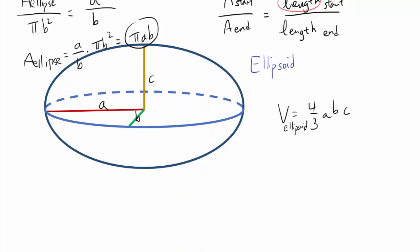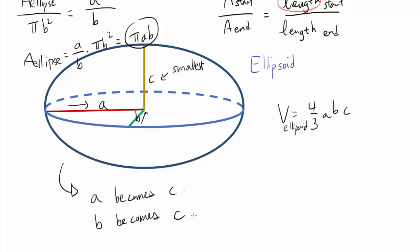Now let's extend this method to three-dimensional space — to an ellipsoid. We think about how the transformation changes the ellipsoid as we squish the sides inward to form a sphere. Let's say c is the smallest dimension. We push a inward until a becomes c, and we push b inward until b becomes c as well. So in this case we have to go through two transformations, not just one.